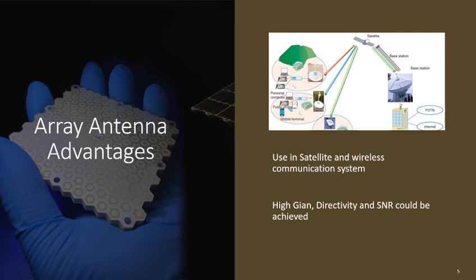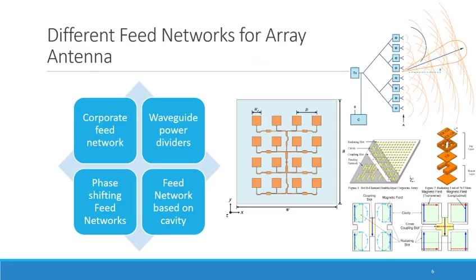When it comes to designing an array antenna, one critical factor to think about is designing the feed network. There are a few common methods for doing this, like corporate feed networks, which are widely used for microstrip patch antennas, waveguide power dividers that use a T-junction network for slot waveguide antennas, phase shifting feed networks that can be implemented using either phase shifters or delay lines, and feed networks based on cavities. Due to the necessity of integrating antennas with the rest of a circuit and communication system today, having a single layer feed network is really important.